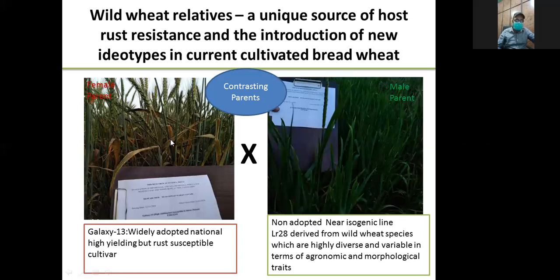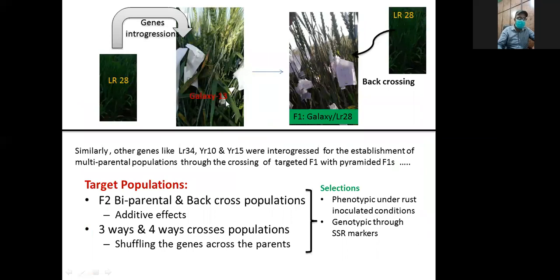Luckily, these species, besides being a source of resistance, also became the source of introduction of new genotypes in the currently cultivated bread wheat varieties. As you can see here, LR-28 was used for introgression into Galaxy-13, which is a mega wheat variety. Similarly, LR-34, Yr-10, and Yr-15 were used for the establishment of biparental populations.